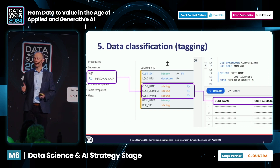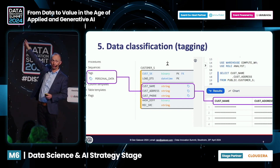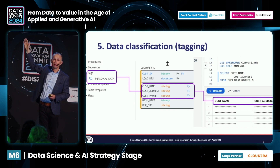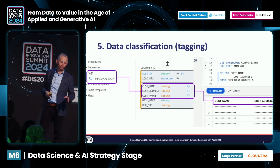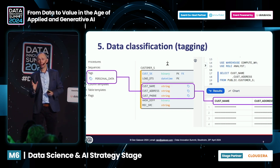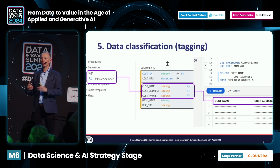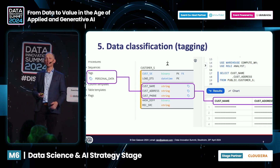Tip number five: data classification — literally labeling our data. In SQL DBM we create a tag called personal data — it's just a label. We can apply that tag in our data models, then use automation to forward engineer and generate our tags in Snowflake. Once those tags are in Snowflake, we can apply them to row level security and column level security. That will determine column masking, which is influenced by tagging.